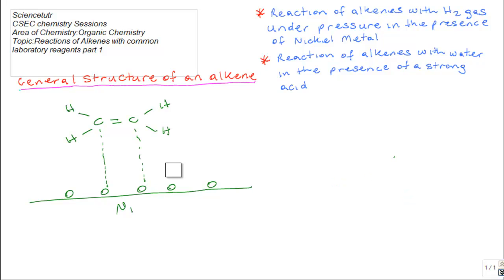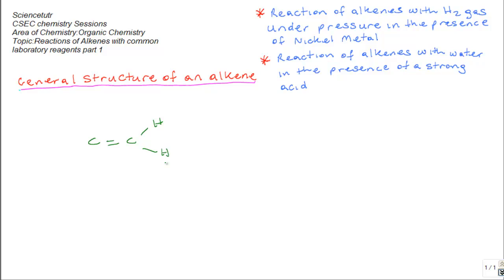The next reaction we'll be going through is the reaction of alkenes with water in the presence of a strong acid. Now we're going to continue to use the example ethane.